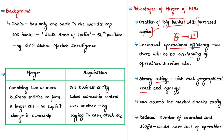With a strong capital base and geographical synergy, the merged entity will be able to absorb market shocks more easily. Additionally, merger will result in branch rationalization and staff rationalization, which would save costs and lead to operational efficiency. Despite these many positives, there are equally many concerns expressed by various experts and stakeholders in the banking sector.